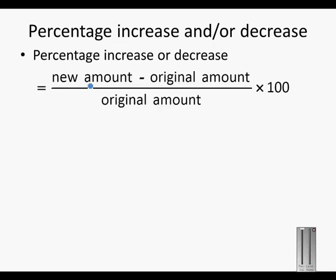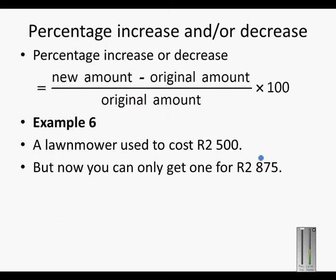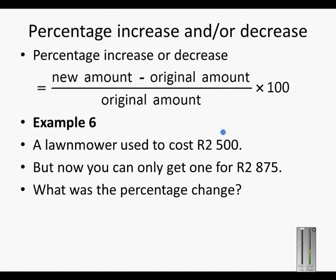Remember the formula is new amount minus original amount, divided by original amount, times 100. A lawnmower used to cost 2500 rand, but you can now only get one for 2875 rand. This is the original amount and this is the new amount.